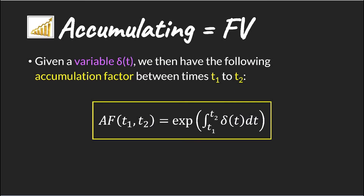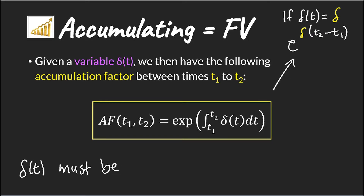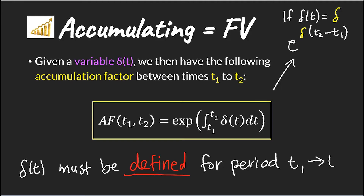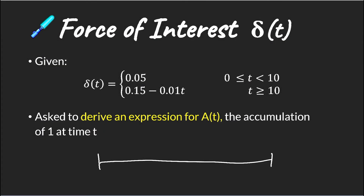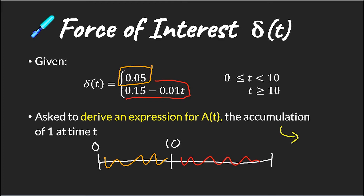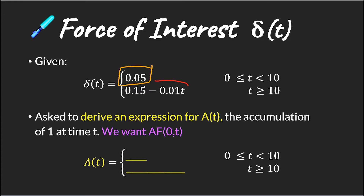We have seen this accumulation factor before. So more formally, when we have a variable force of interest function, we simply integrate our function from time t1 to time t2 to get our accumulation function. The important thing to note is that our force of interest function needs to be defined for the period that we're integrating over. Given an example where we are asked to derive an expression for our accumulated amount at time t, we need to ensure that our force of interest function is defined over the same periods, and we are deriving the accumulation of one at time t.